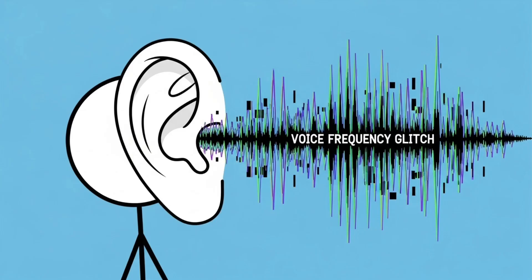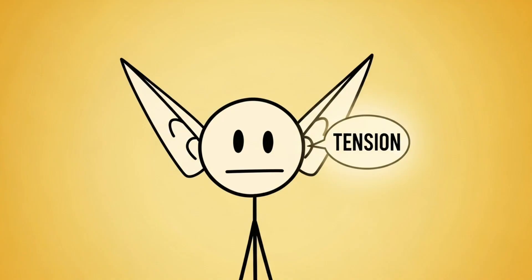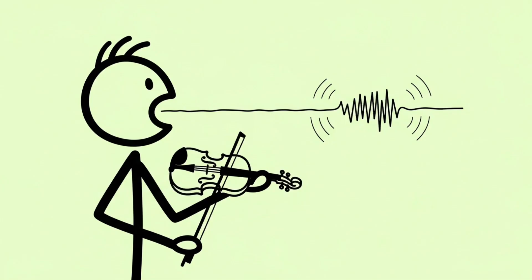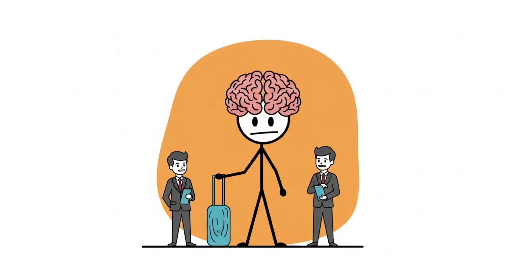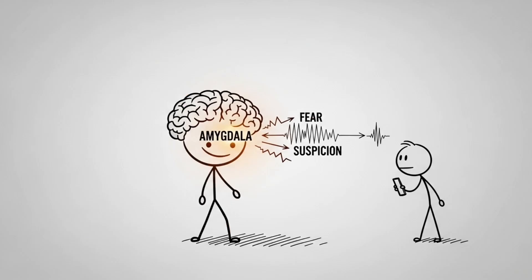Number seven, the voice frequency glitch. Your ears are tattletales. They can hear emotional tension even when your words can't. When people lie, their voice pitch often changes ever so slightly, like a stressed violin string. But the human brain doesn't translate that difference, it just makes you feel uneasy. Researchers found that tiny changes in voice frequency trigger an instinctive response in the amygdala, the part of your brain responsible for fear and suspicion.